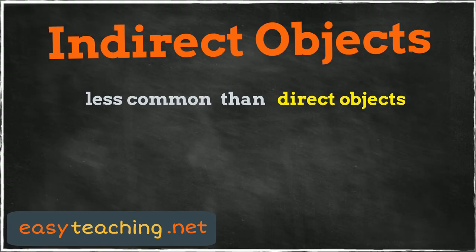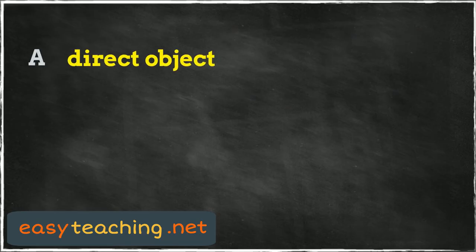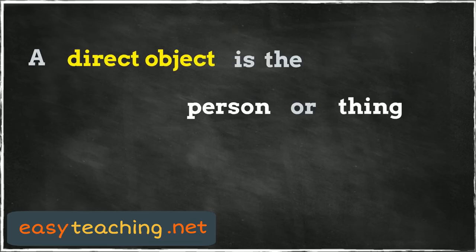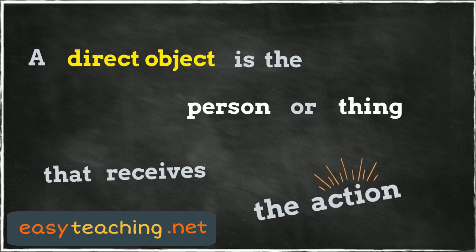If you've watched our direct objects video, you'll remember that the direct object is the person or thing that receives the action from the subject. If you haven't seen the video and you'd like to, check the link in the video description.